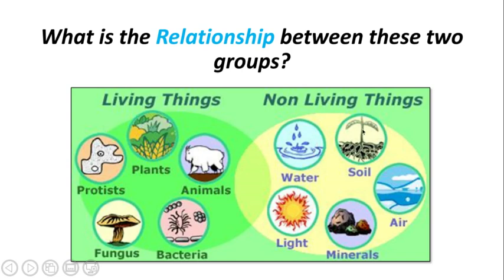Those animals die, then bacteria and fungus break those animals down, and the process starts all over again. Meanwhile, we have water, soil, light, minerals, and air — all these things are non-living, but together they interact. Non-living things don't really need the living things, but living things need all of these non-living things.